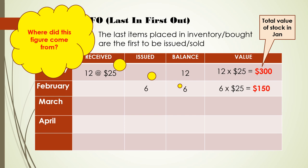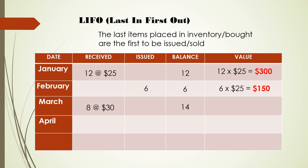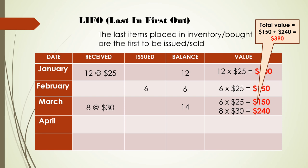In March, we received 8 reams of paper. Therefore, our new balance would be 14 reams of paper. That balance came from 6 as at the end of February added to 8 received in March — 6 plus 8 equals 14. So we have 6 reams of paper at $25 and 8 reams of paper at $30 for a total stock value of $390 as at the end of March.